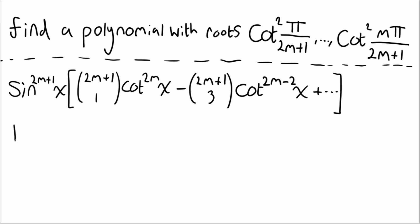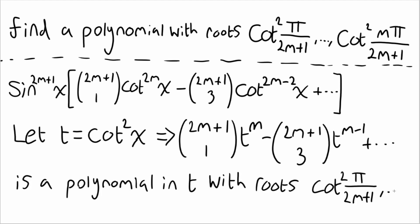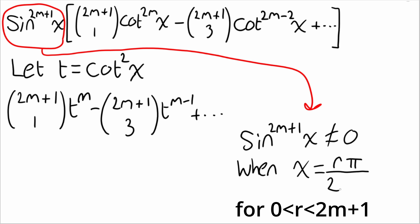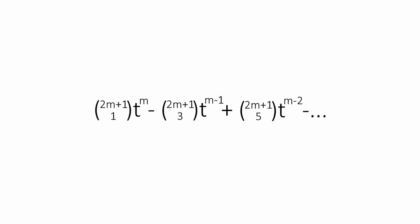Now we can make another substitution. By introducing a new variable t, and replacing every cotangent squared term with it, we get a polynomial in t with the roots that we need. Now we were able to ignore this sine term out front, because in effect, it's just a constant. Over the interval that we're interested in, it's never 0, and as a result we're able to just leave it off the end polynomial.